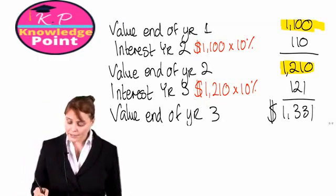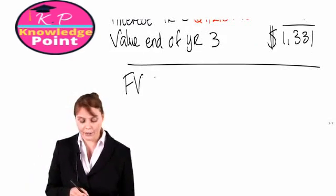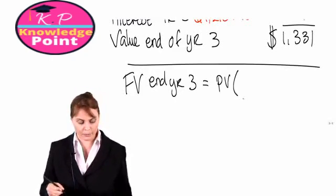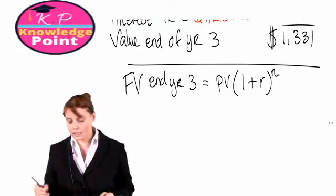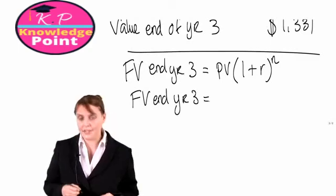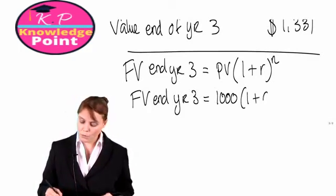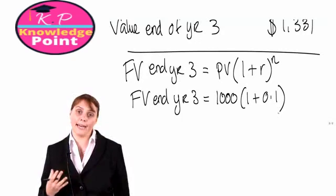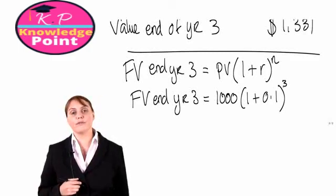Now let's do it the quick way. We could have calculated the future value at the end of year three by using our formula: present value multiplied by one plus r to the power of n. Plugging in the numbers, the future value at the end of year three is equal to the amount invested — the present value — multiplied by one plus our interest rate of ten percent, or 0.1, to the power of n. In this case n is three, as we are looking for the value after three years.